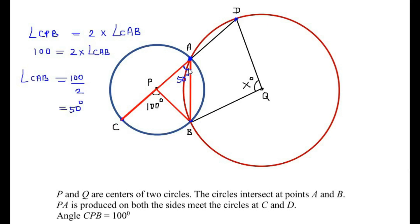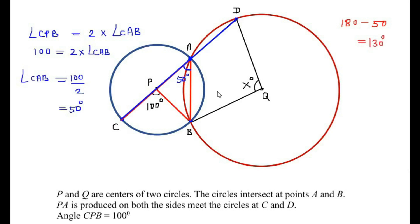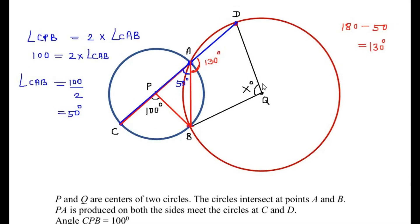Now we use the straight line C-P-A-D. Since PA was produced on both sides, it forms a straight line. Using the property of a straight line, the total angle along line PAD is 180 degrees. We subtract 50 degrees from 180 degrees to get the remaining part: angle BAD = 180 - 50 = 130 degrees.